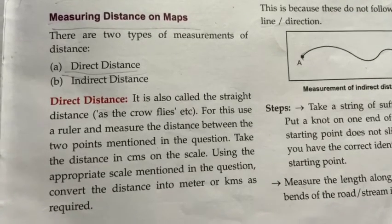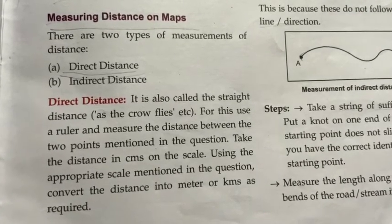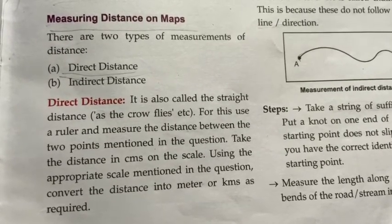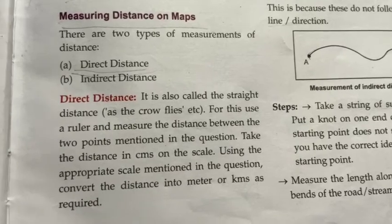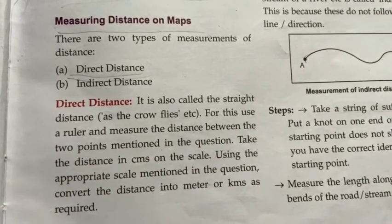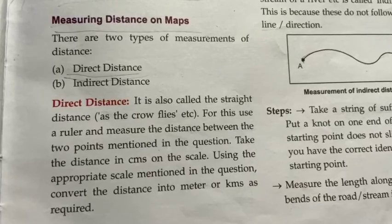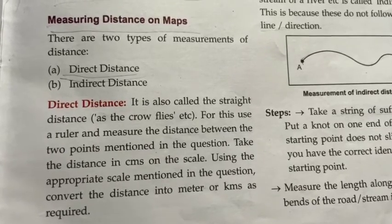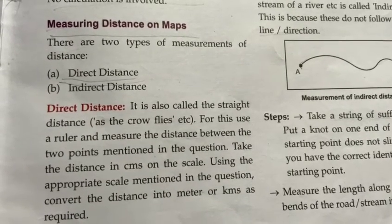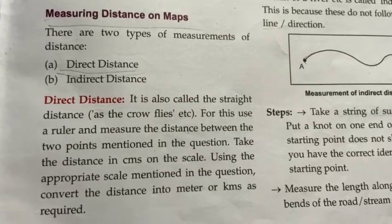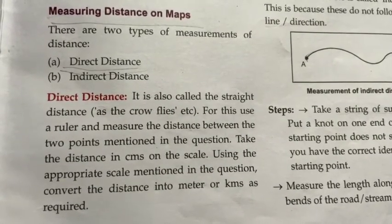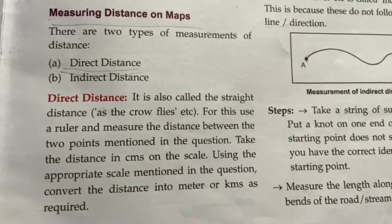Basically there are two ways of measuring distances. The first one is direct distance. It is called the straight distance. For this, a ruler is used and the distance between two points is measured. Take the distance in centimeters on the scale, using the appropriate scale mentioned in the question, and convert the distance into meters or kilometers as required.